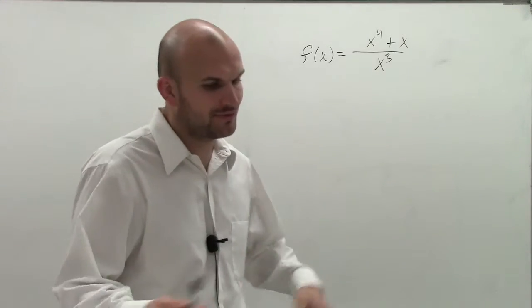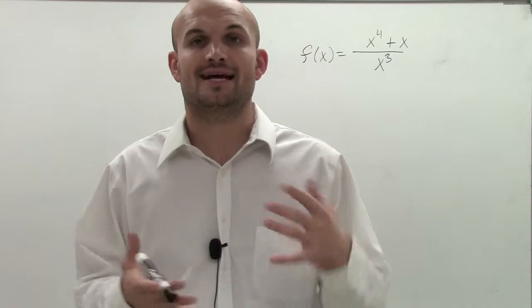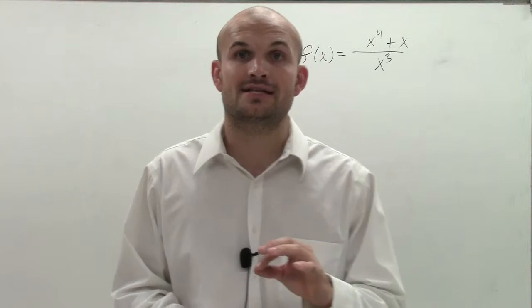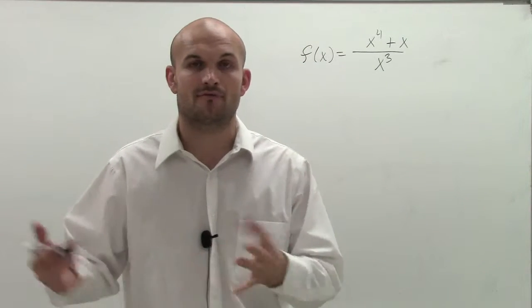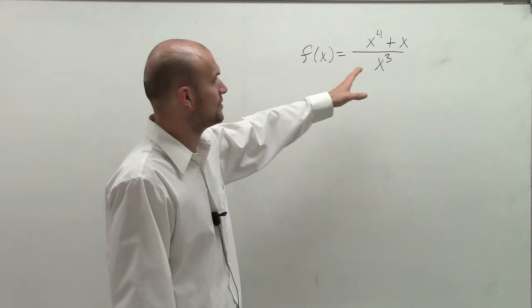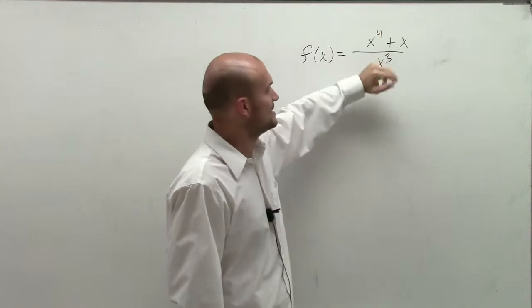So the first thing when we're finding asymptotes, the easiest thing to always look for is the horizontal asymptotes because that makes you look and identify the exponents of your numerator and your denominator of your leading terms for a polynomial. And what we determined was when we have x to the fourth plus x and x cubed, what I notice is my denominators are not the same.